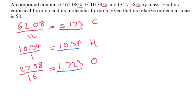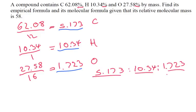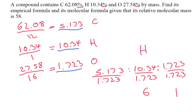So we've got 5.173, 10.34, and 1.723 — divide each one by the smallest number, 1.723. Oxygen divided by 1.723 gives 1. Hydrogen: 10.34 divided by 1.723 gives us 6. Carbon: 5.173 divided by 1.723 gives us 3.